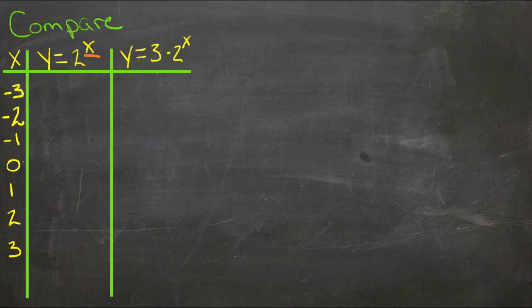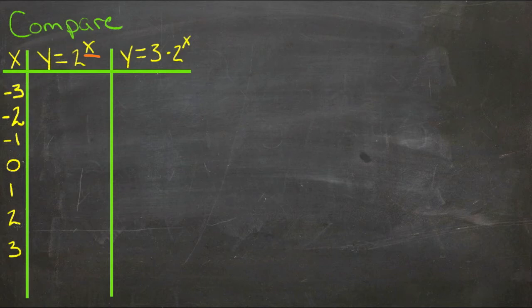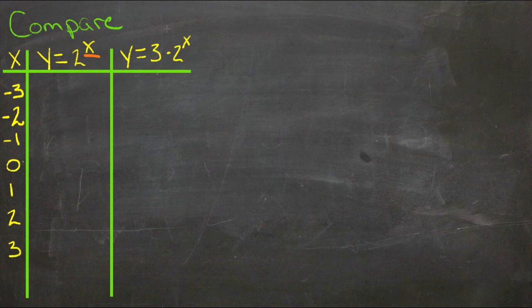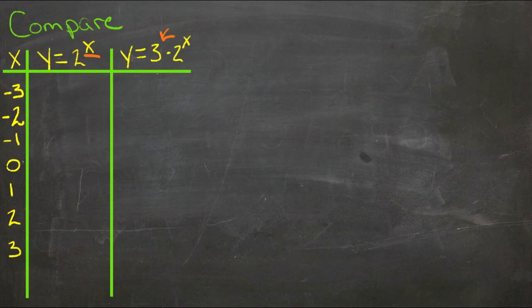So what we're going to do is take the terms I have over here on the left, we're set at negative 3 and go up by ones up to 3. We're going to plug those in for x in each of these two versions of exponential functions. The difference between the two of them is this constant term right here. The function on the right, y equals 3 times 2 to the x, is just exactly the same as the one on the left, except it's been multiplied by a factor of 3. So let's take a look at the different values as they go in.